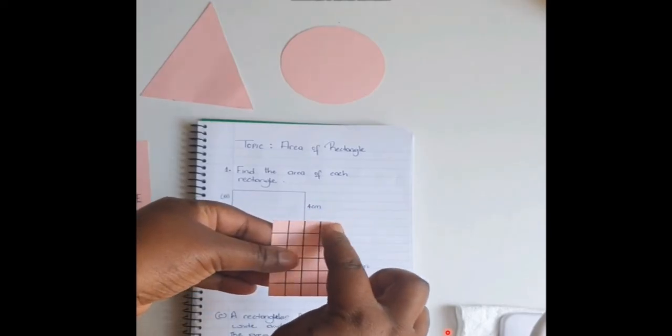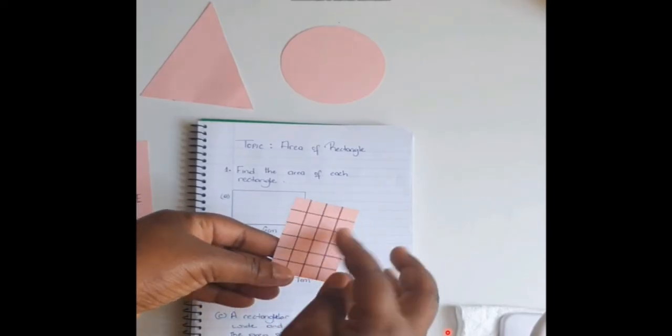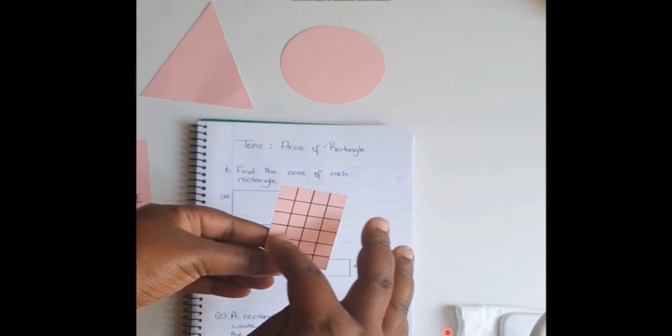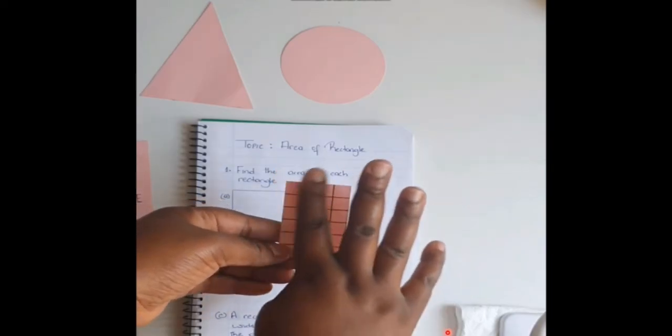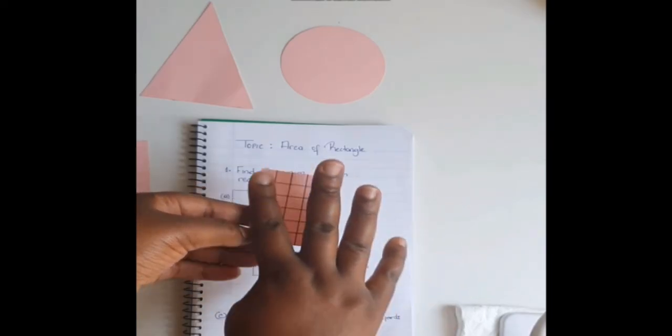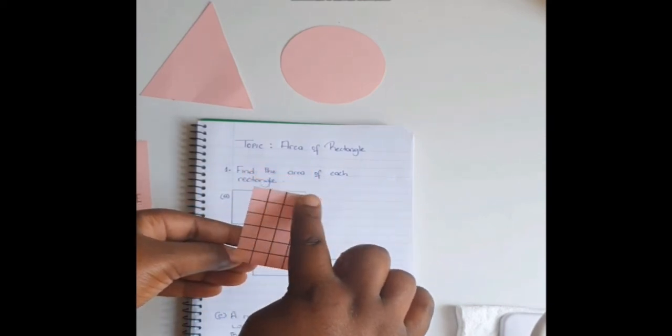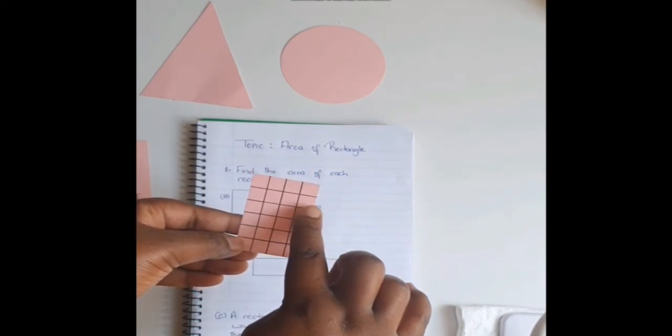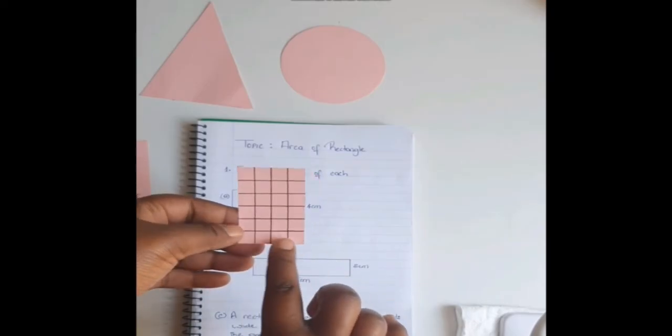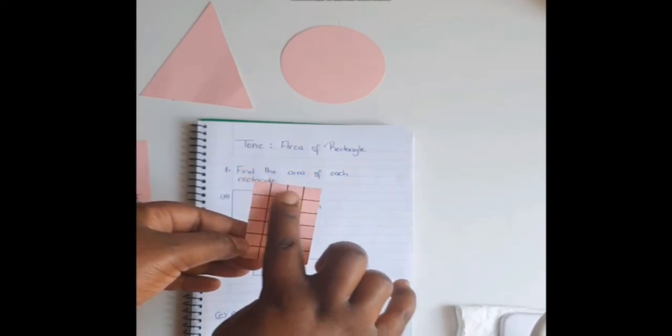Before even using the length times width method to find the area, you can have them just counting the squares. And that shows that they are looking at the area is the total coverage of a surface. That will help them. So I am just looking at the square units that is used to cover the surface. So you have them just counting the squares.